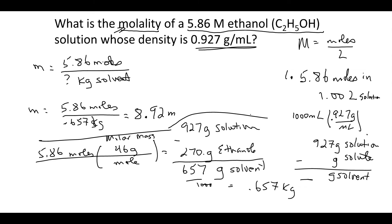To summarize the strategy: step one, understand and write out the units. Step two, use density to find total grams of solution. Step three, for molality you need moles per kilogram, so subtract grams of solute from grams of solution to get grams of solvent, then convert to kilograms.